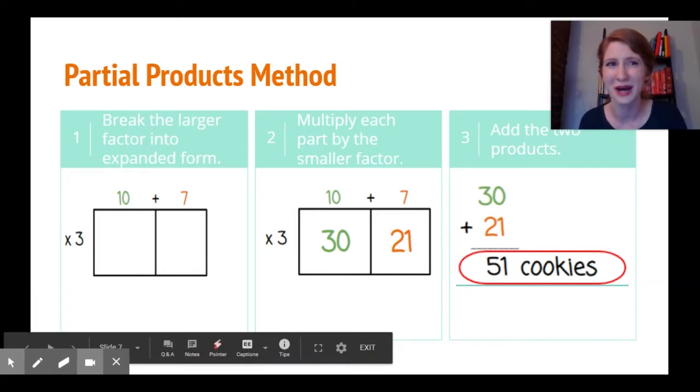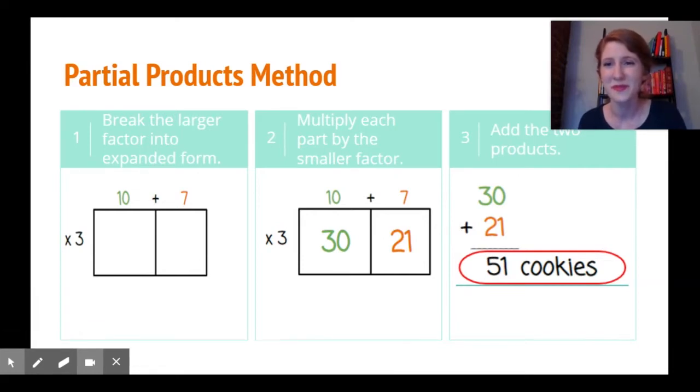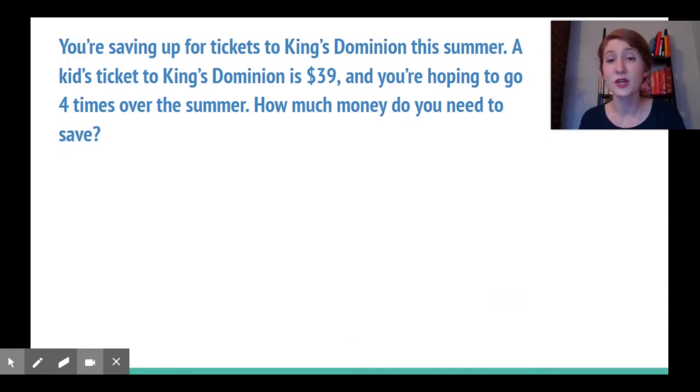Let's try that with a problem about you. You're saving up for tickets to King's Dominion this summer. A kid's ticket to King's Dominion is $39 and you're hoping to go four times, so how much money do you need to save?